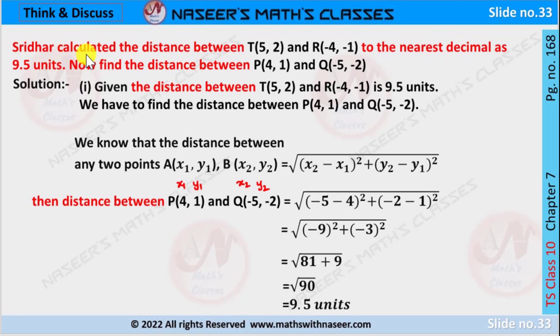Sridhar calculated the distance between T(5, 2) and R(-4, -1) to the nearest decimal as 9.5 units. Now find the distance between P(4, 1) and Q(-5, -2).